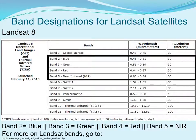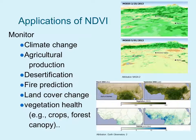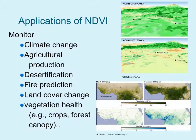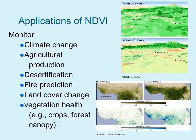We can apply NDVI to monitor many physical characteristics of the earth. We can assess agricultural production, desertification, fire production, land cover change, vegetation health, as well as changes related to climate change.